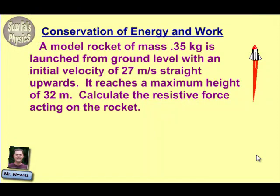Hey, thanks for joining the Sioux Falls Physics teachers here. The problem here is going to look at conservation of energy and work. So now we're going to combine a little work into this idea of conservation of energy. In this problem, we have a model rocket with a mass of 0.35 kilograms. It's being launched and given an initial velocity of 27 meters per second, and we're going to assume straight upwards, so we're not going to deal with any angles here.